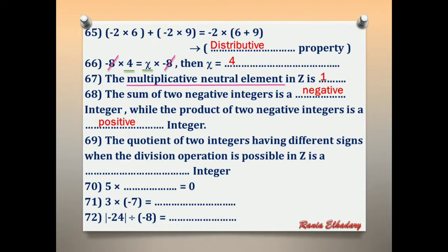Number 69: the quotient of two integers having different signs. 'Quotient' means divide. Different signs means one negative and one positive. Negative divide positive equals negative. Positive divide negative equals negative. So the answer is negative.